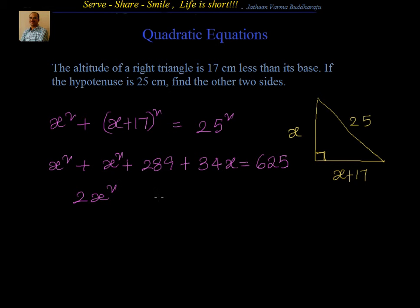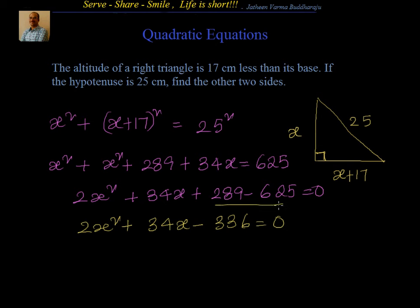You will get x square, x square add up to 2x square plus 34x plus 289 minus 625 equal to 0. So the next step will be 2x square plus 34x minus 336 equal to 0. Divide by 2 to make it simple: x square plus 17x minus 168. Now we are in the form of ax square plus bx plus c, a quadratic equation. Now we have to solve this by splitting the middle term.